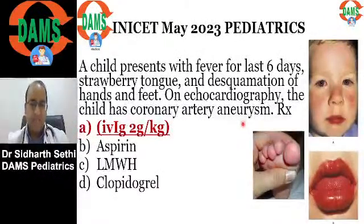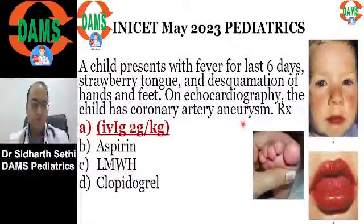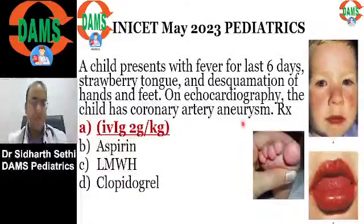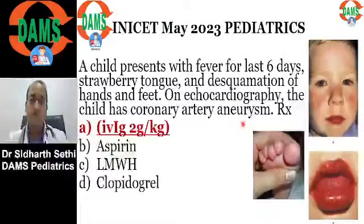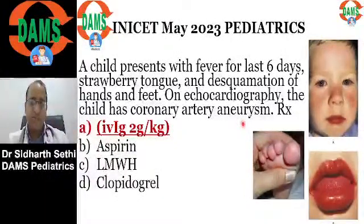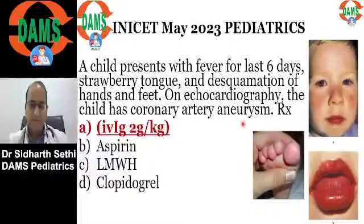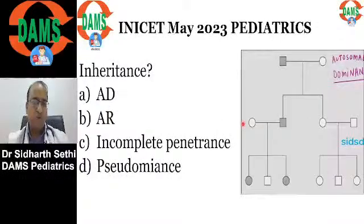IVIG is given at 2 grams per kg during the acute phase, within the first 10 days of illness, along with high-dose aspirin. IVIG is a must because it reduces the risk of coronary artery aneurysms and cardiovascular complications of Kawasaki disease.